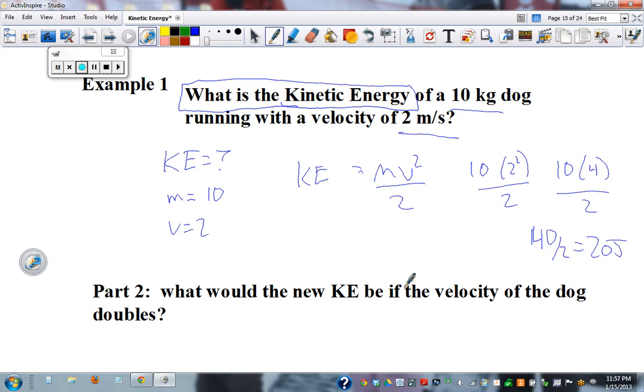What would the new kinetic energy be if the dog's velocity were to double? Well, kinetic energy is related to velocity squared. So if you double velocity, then we have 4 times the kinetic energy. So the answer should be 80. So let's try it. 10 times 4 squared over 2. 10 times 16 over 2. 160 divided by 2, 80 joules.